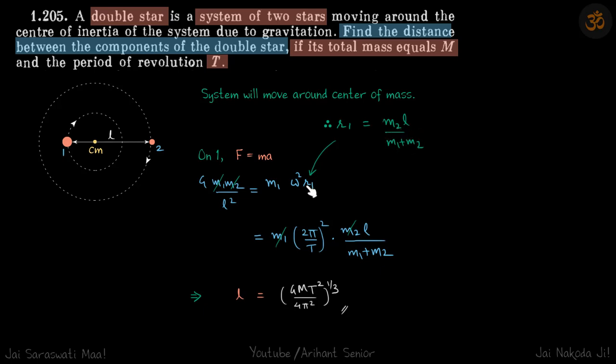Why did we write the acceleration in the form of omega square R? Because omega we can relate with time period, which is given. That's why we did not write it as V square by R. Now omega we can write as 2π by T.